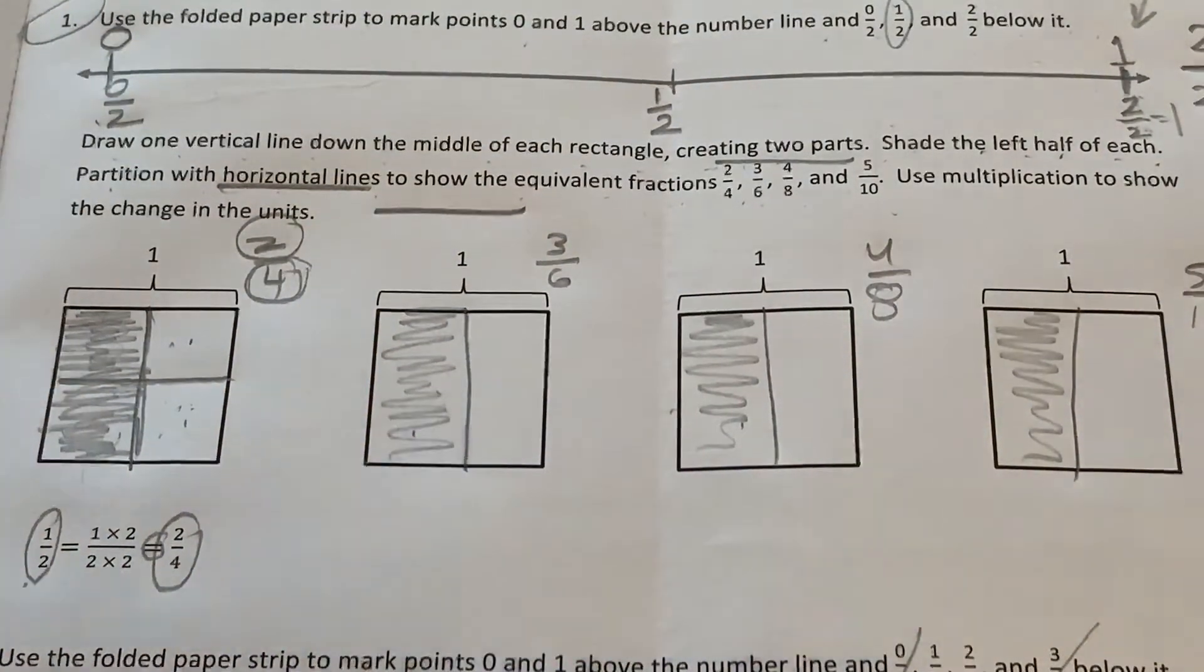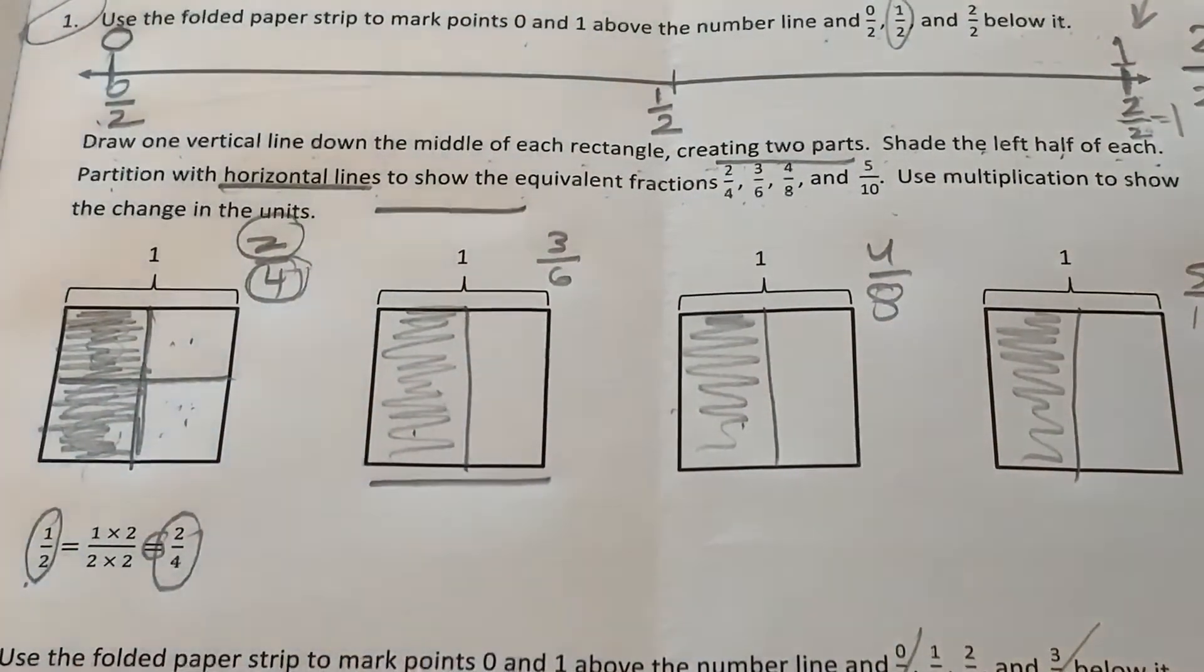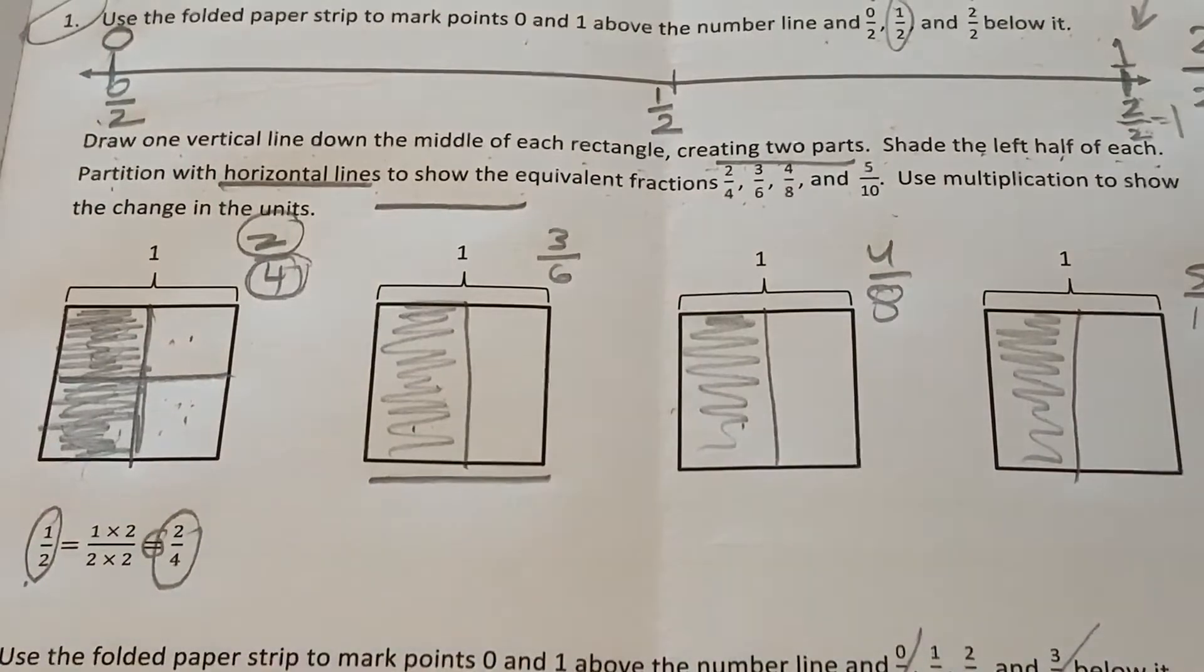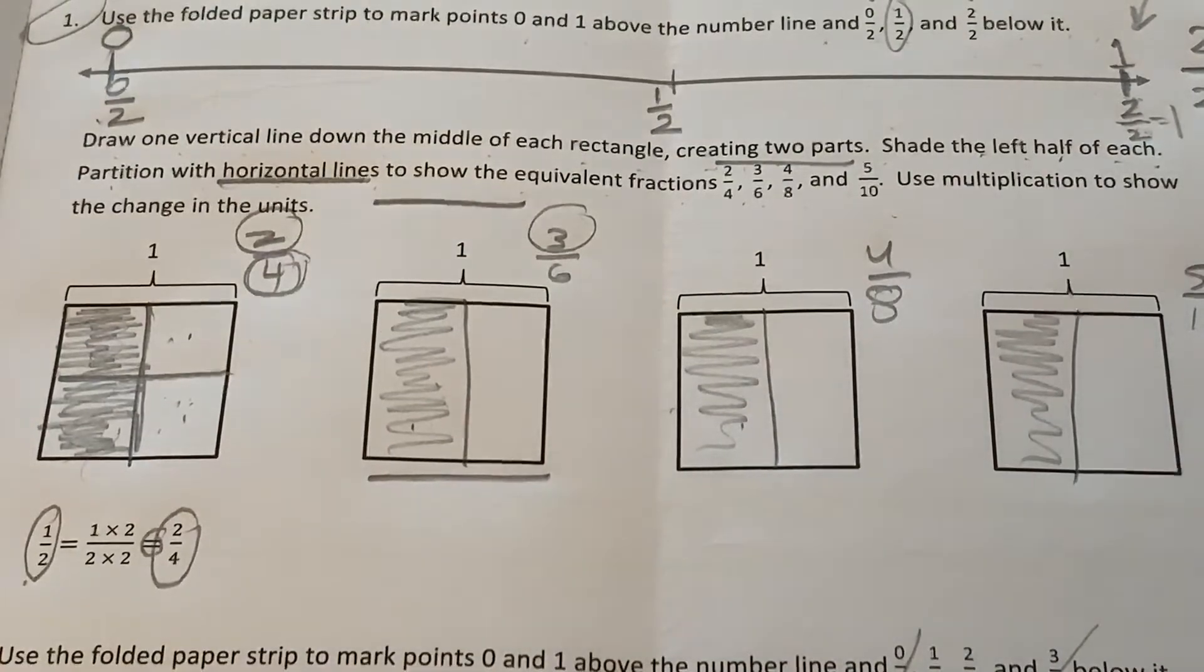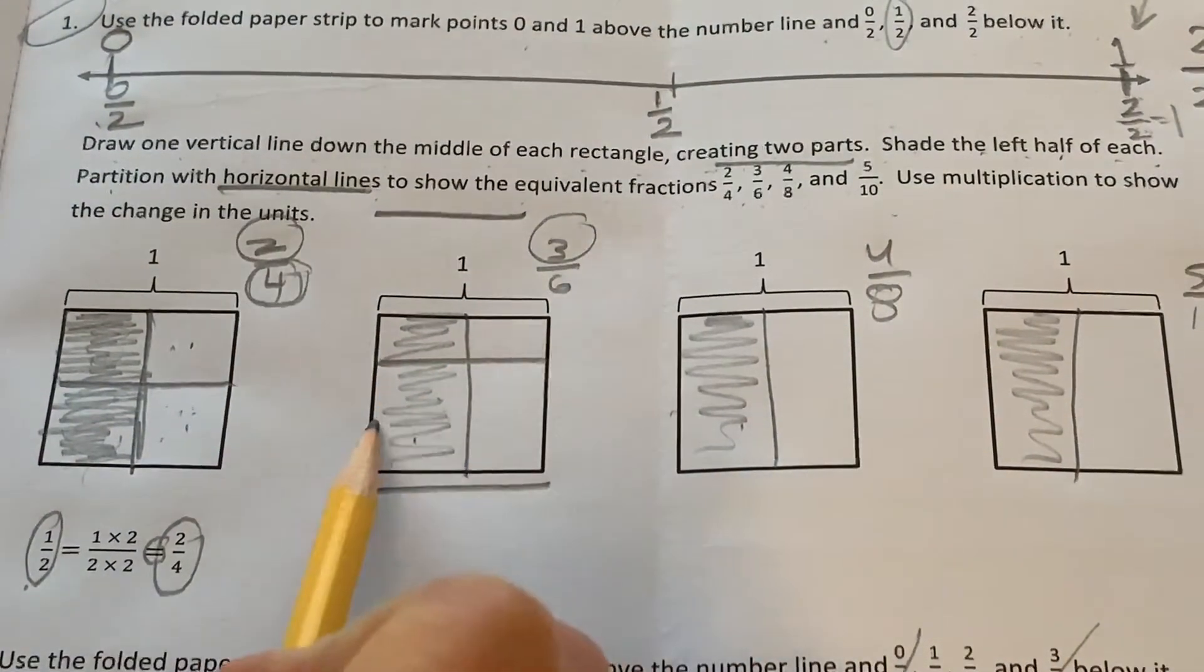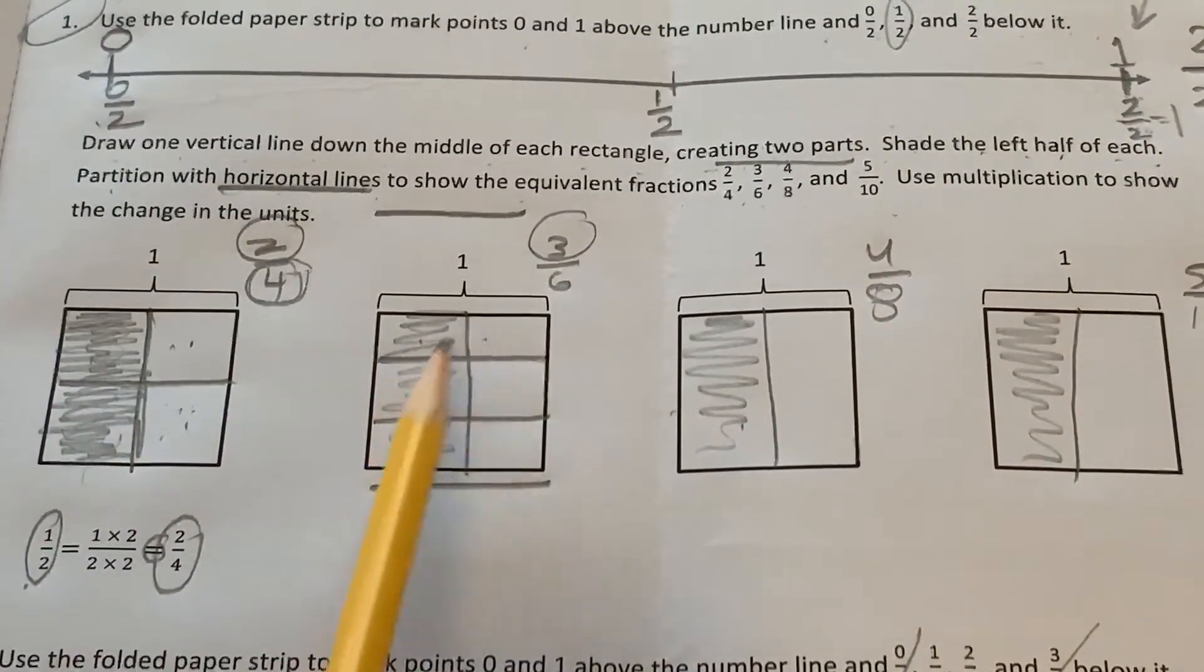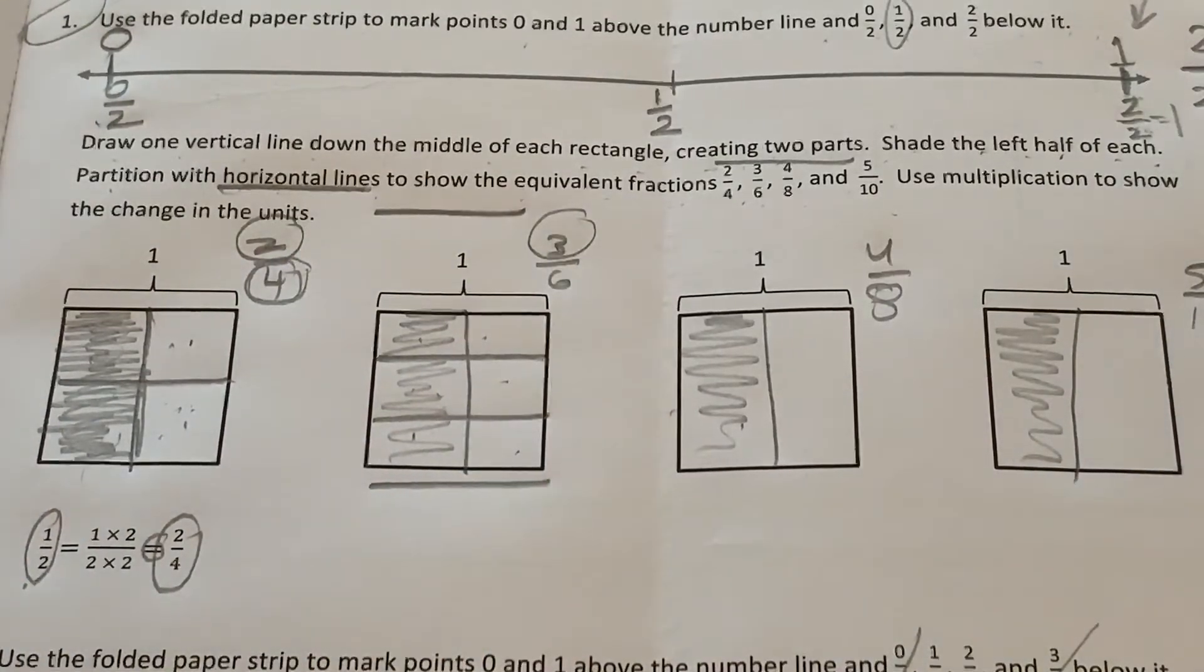Okay, try the second one by yourself. How can you draw horizontal lines to make six little squares? And then, you're going to shade in three of them. Let's see. To make six squares, I need two horizontal lines. One, two, three, four, five, six. And then I'm going to shade in three of them.